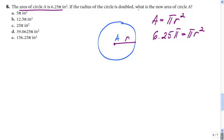What is the question? What is the new area of circle A if the radius is doubled? So I have 2 times radius will be my new radius for circle A.